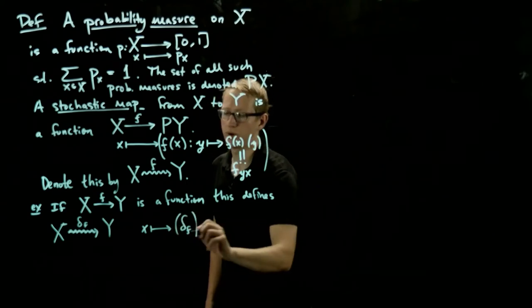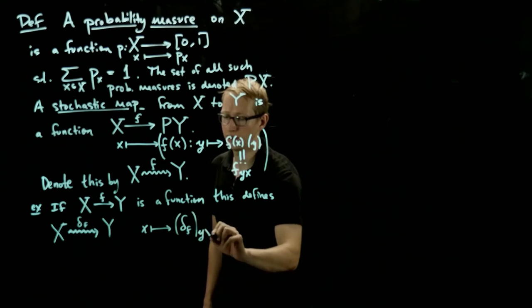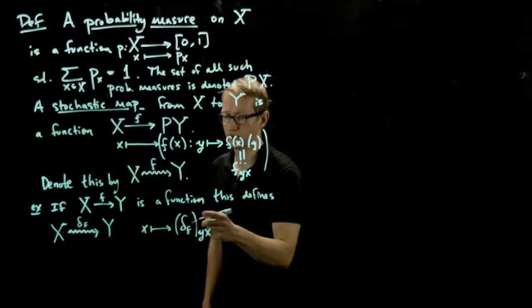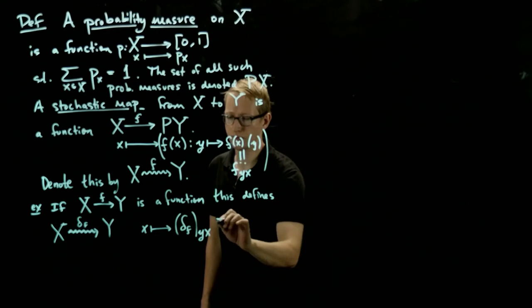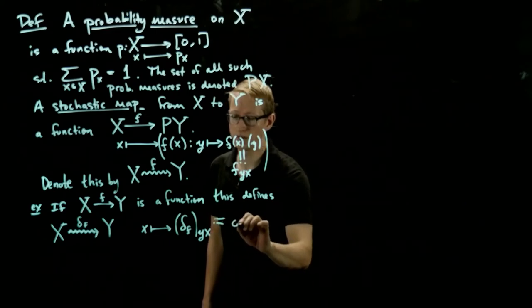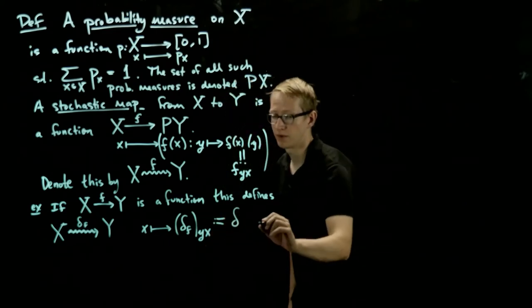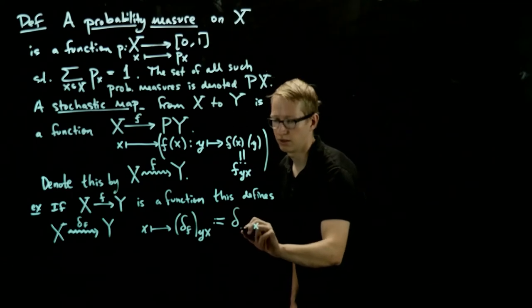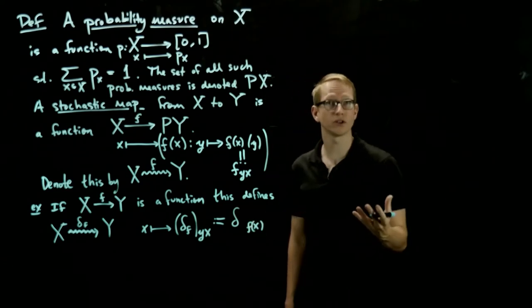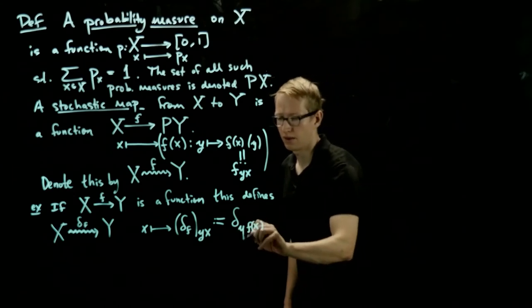And what should that probability measure be? If I take an element in Y and plug in our initial element x, using this notation here, then this is defined to be the Kronecker delta. So if we take the element x, apply f to it, we know what that is because we have a function already, and then we plug in y.